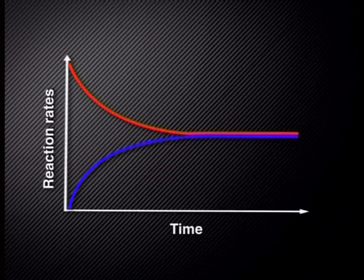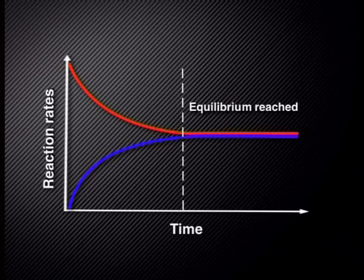After some time, the rate of the forward reaction is equal to the rate of the reverse reaction. The system is now in a state of chemical equilibrium.